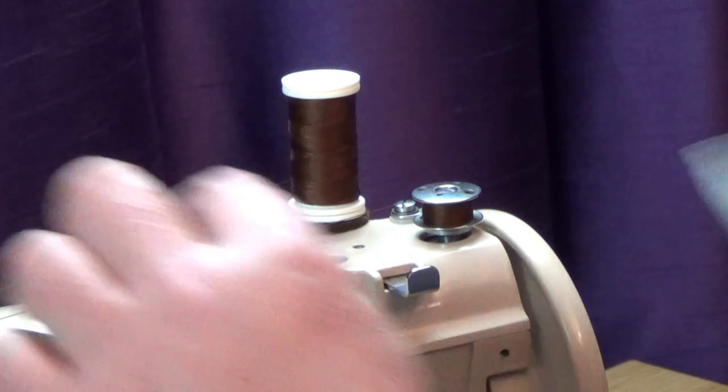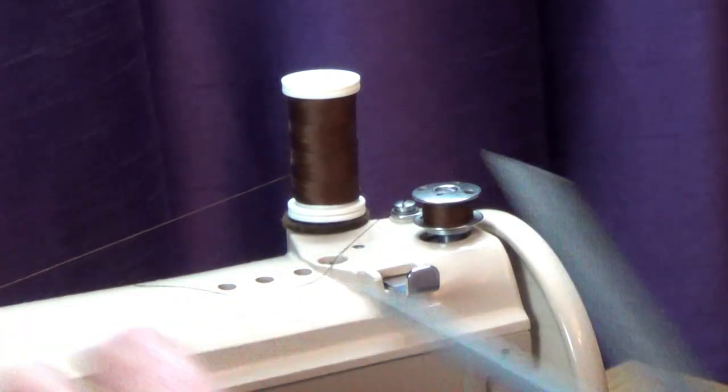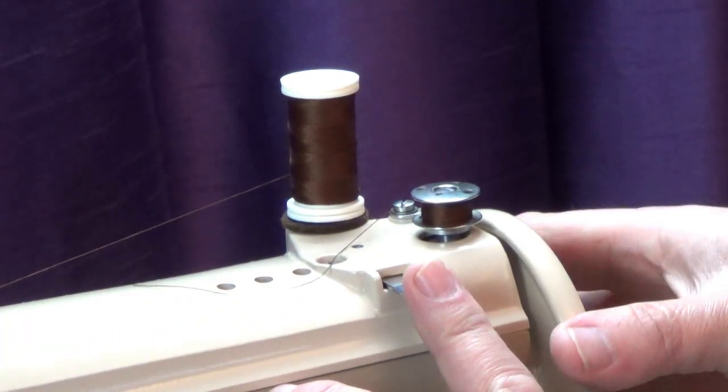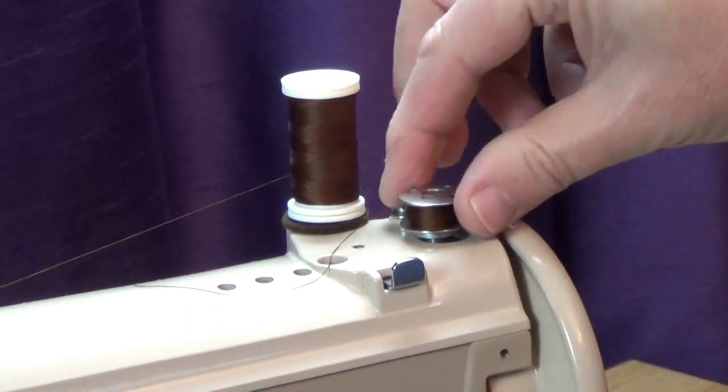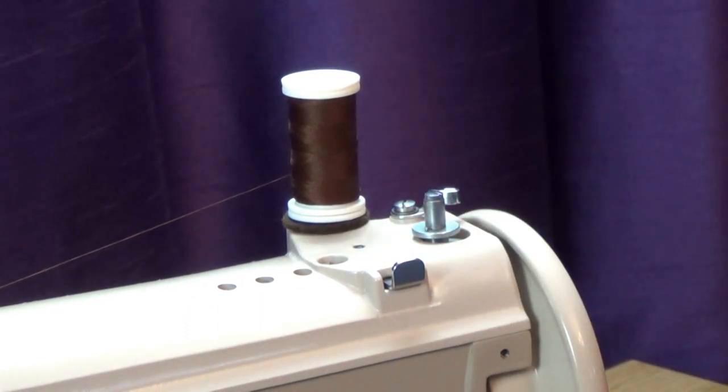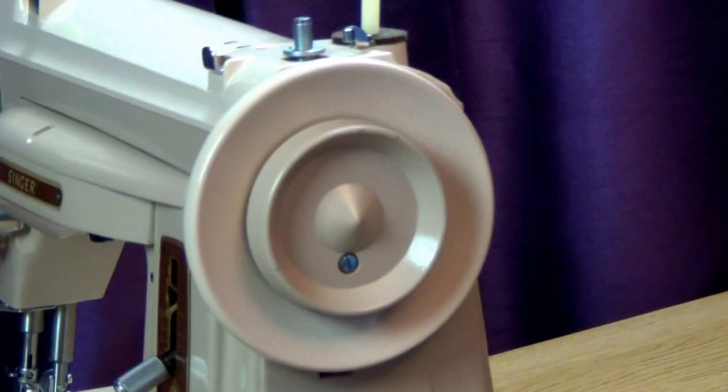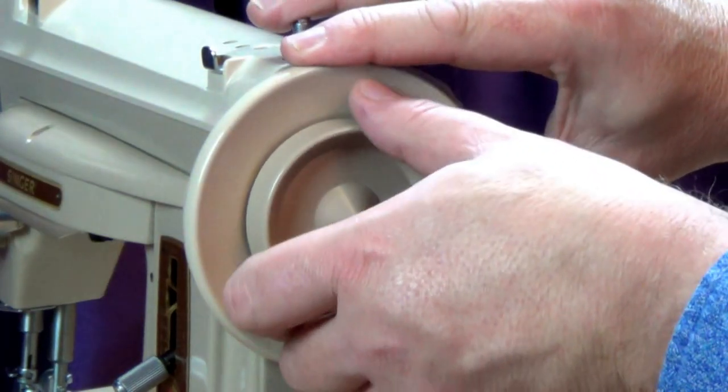When there's sufficient thread on the bobbin, stop the machine and cut the thread. Disengage the winder, and remove the bobbin. The winder will automatically disengage when the bobbin is full. Tighten the stop-motion knob.